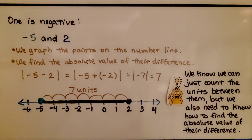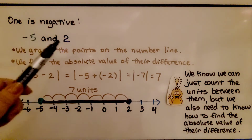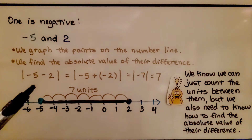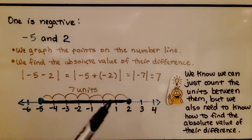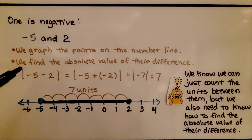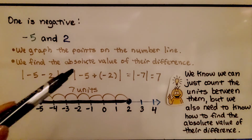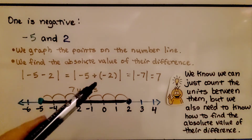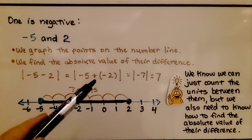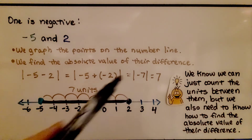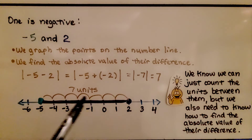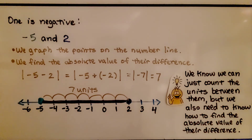Here's another example when one is negative. We have negative five and positive two. We graph the points on the number line — here's negative five, here's positive two. We find the absolute value of their difference: the absolute value of negative five minus two, which equals the absolute value of negative five plus negative two — adding the opposite — which equals the absolute value of negative seven, which is seven. There are seven units between them. We know we can count, but we also need to know how to find the absolute value of their difference.